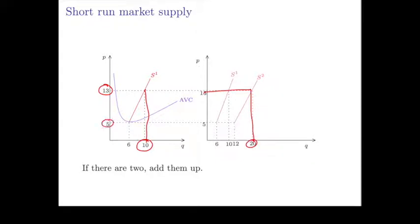Similarly, at the price of 5 a single firm produces 6, so if there were two firms they would produce 12. And so you do this for every possible price and you get a supply curve for two firms.